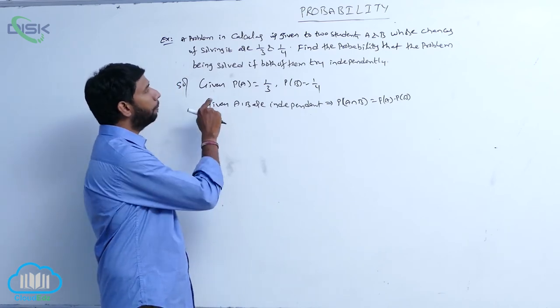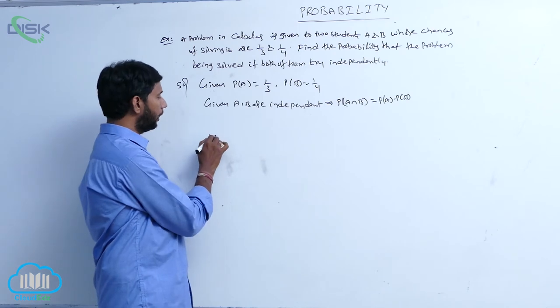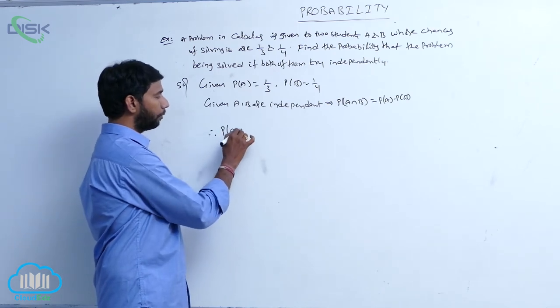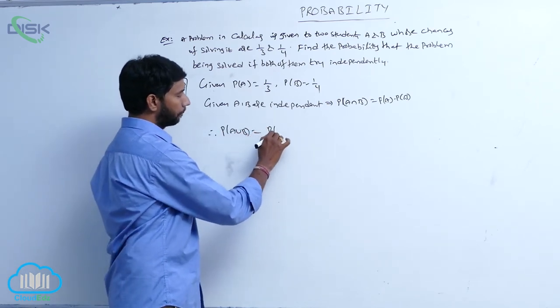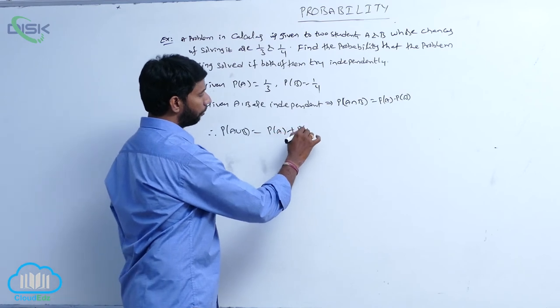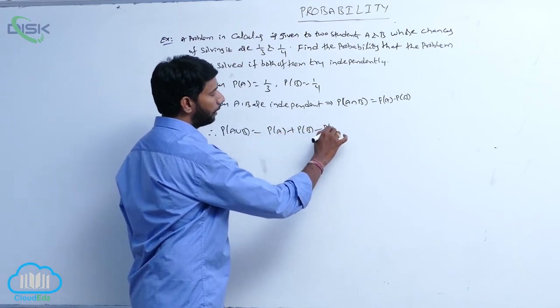The required value is the problem being solved if both of them try independently, that is, P of A union B is equal to P of A plus P of B minus P of A intersection B.